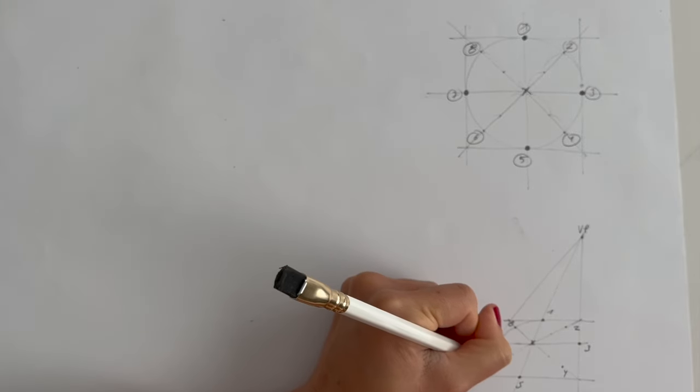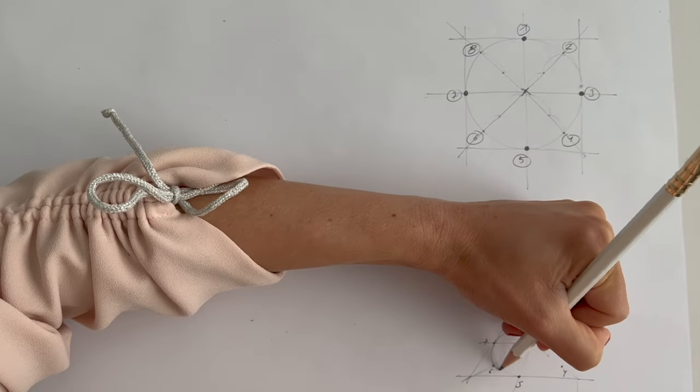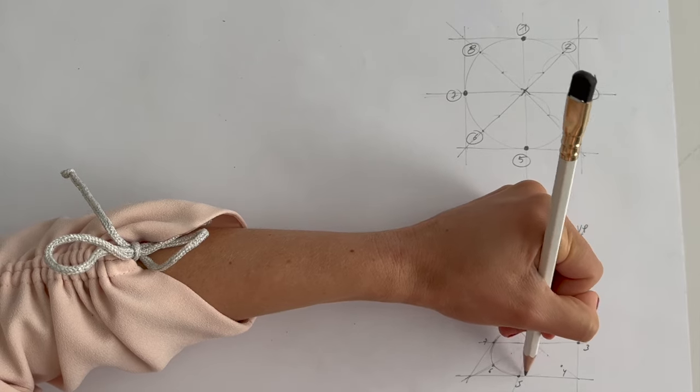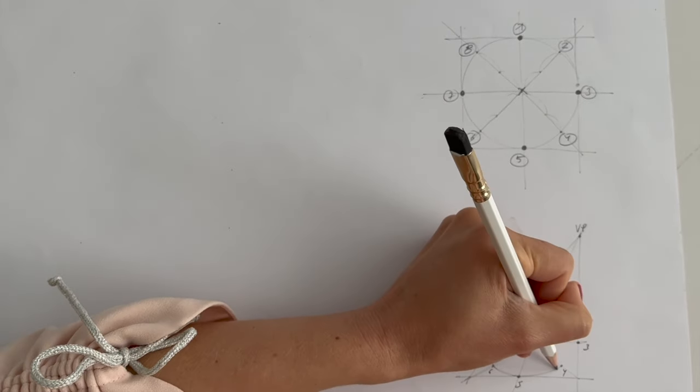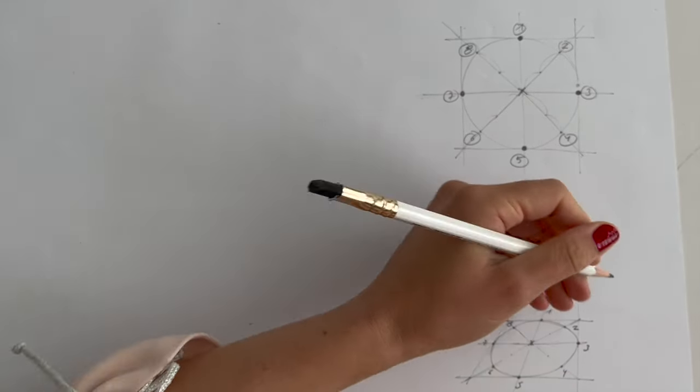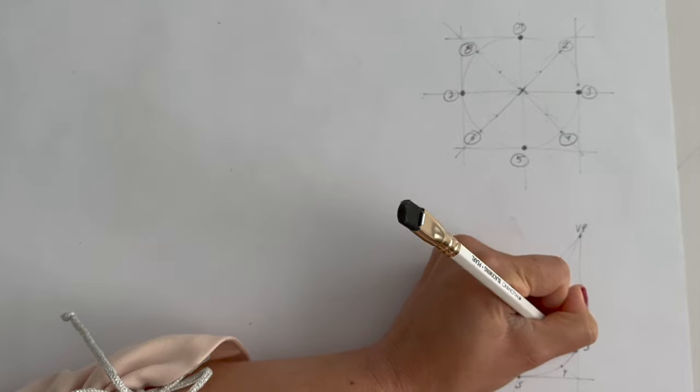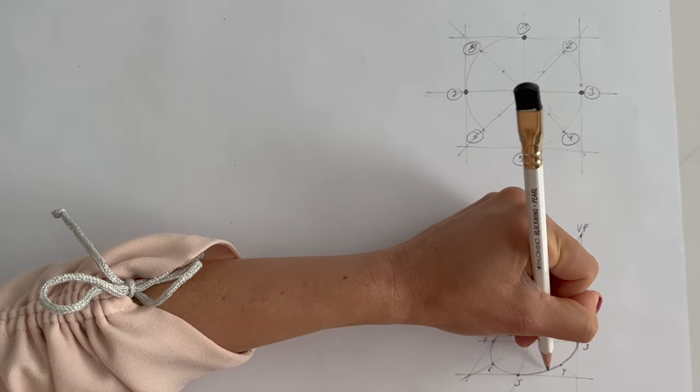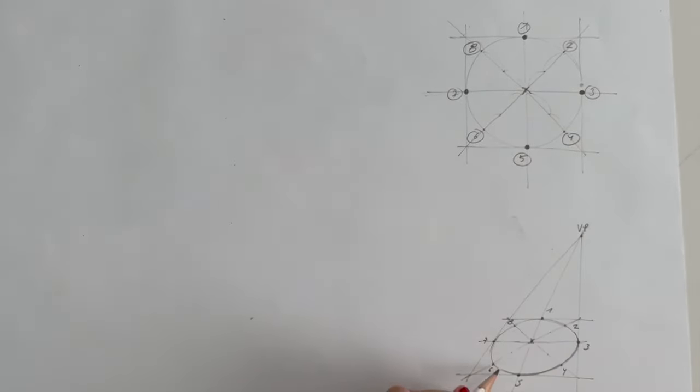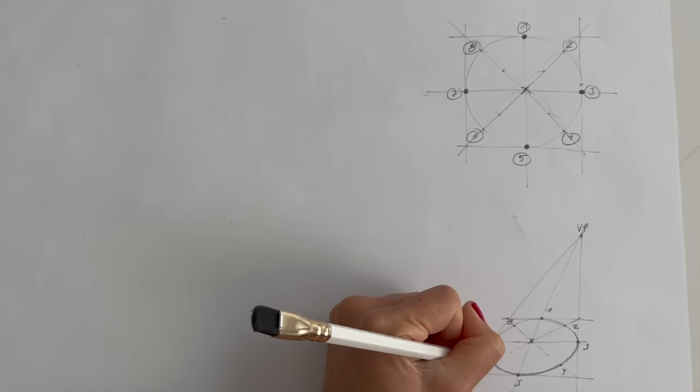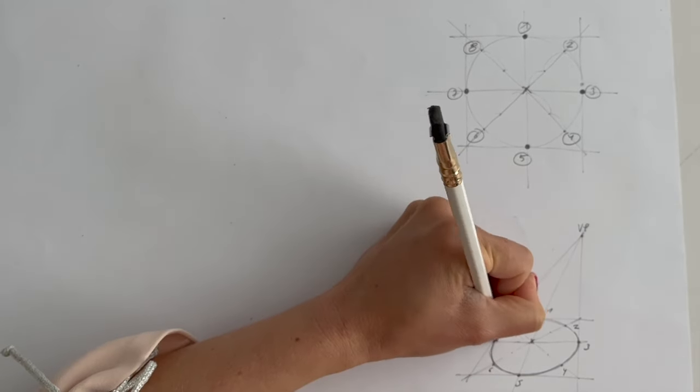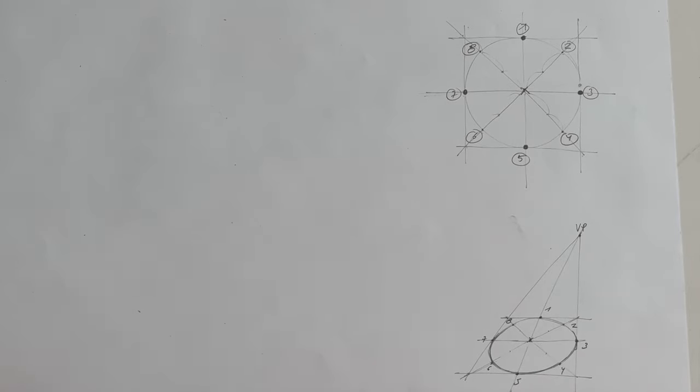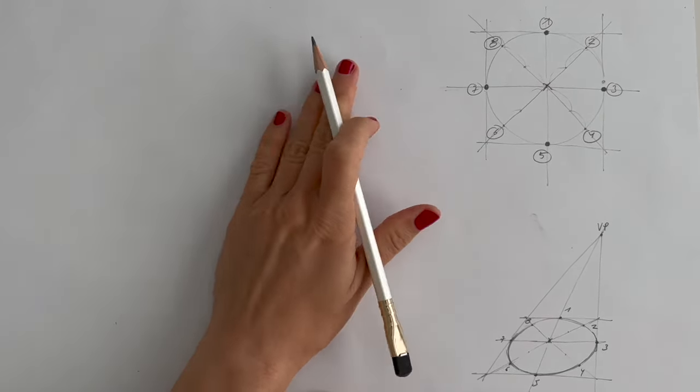And the next task is simply to connect those dots. We can do it quite accurately by drawing those curves starting from each point. And this gives us this beautiful circle in perspective. Of course, when your hand will become more trained with the ellipses, you'll be able to draw them just by hand without any guidelines, without those marks. But this method really helps especially the beginners to start with ellipses.